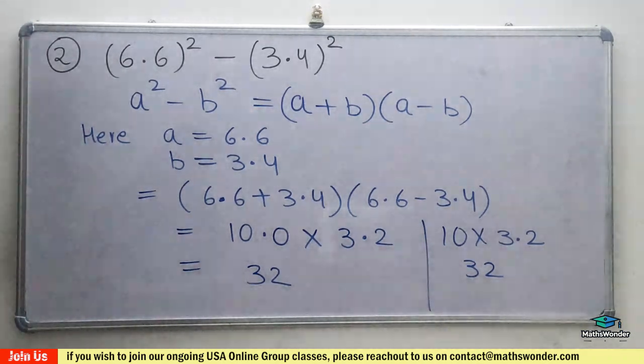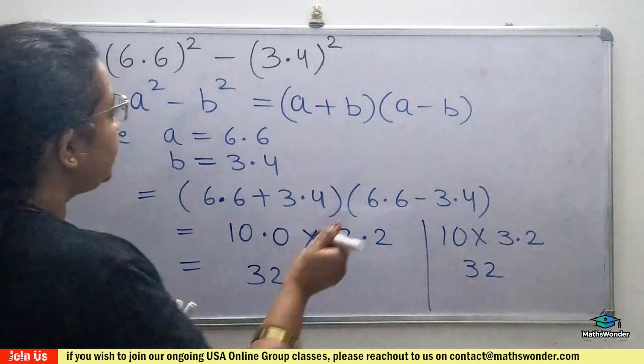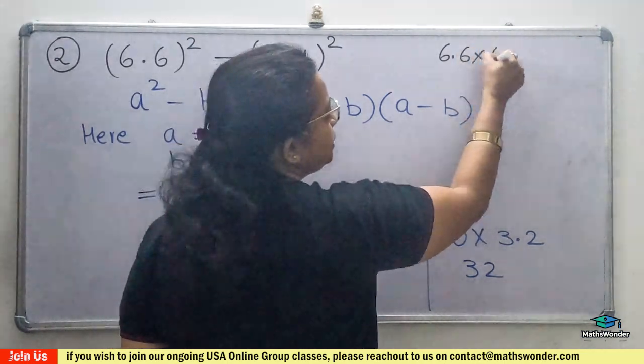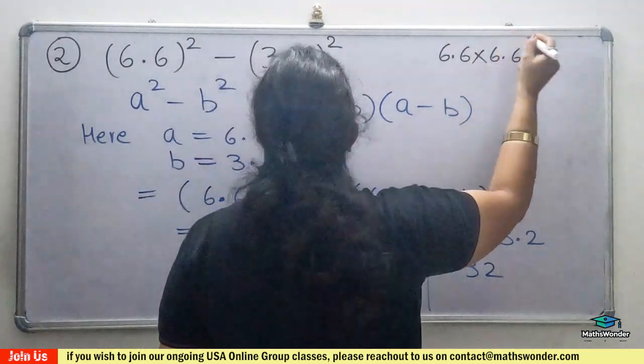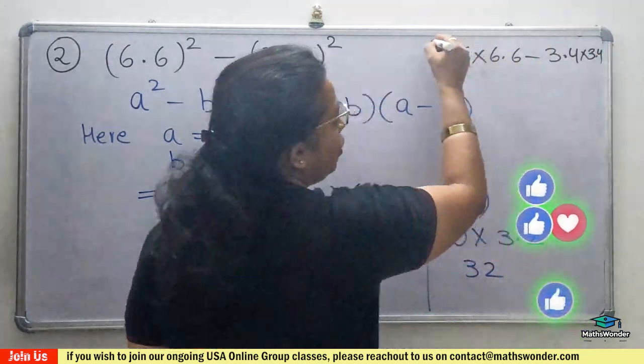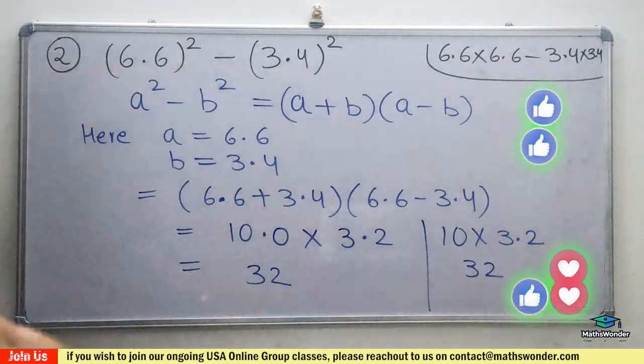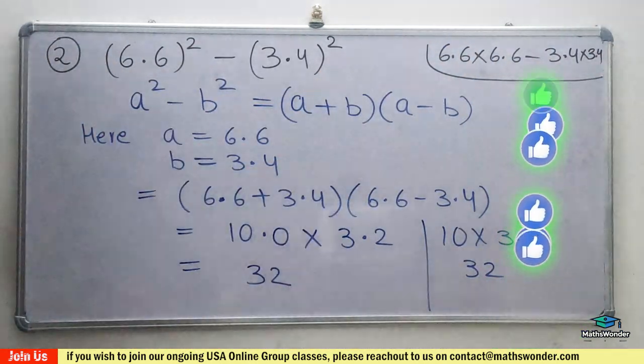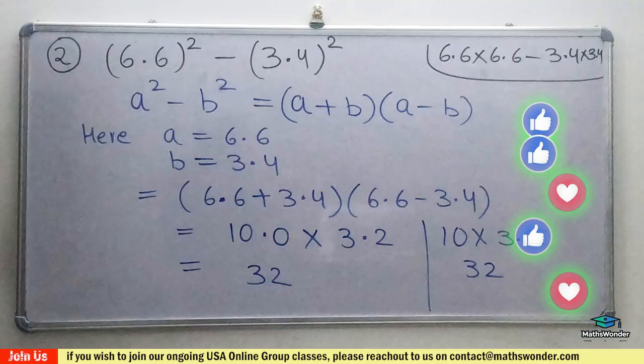If you use the normal method, like you know, 6.6 times 6.6 or subtract 3.4 times 3.4, this will also give the same answer, 32, but it will take time and it's a lengthy method. So don't go for that.